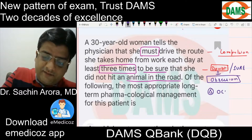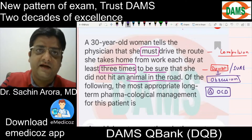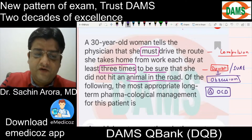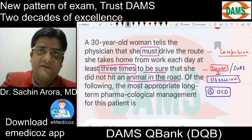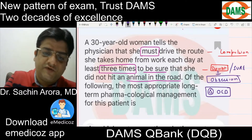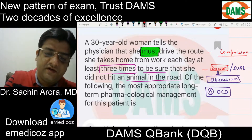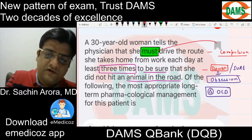For example: I must repeat my revision five times otherwise I will not remember anything. I must repeat myself four times otherwise I am not clear. I must wash my hands 30 times. Whenever this 'must' thing comes in psychiatry, this is the key word for compulsion.